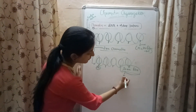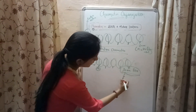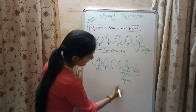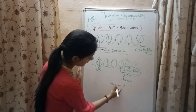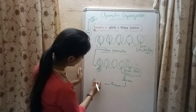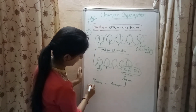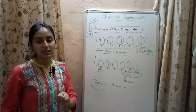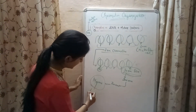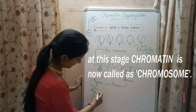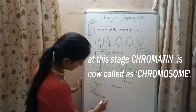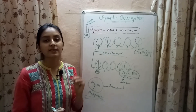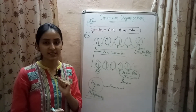Further folding of this chromatin leads to the production of a 300 nanometer fiber, then a 700 nanometer fiber, and lastly a 1400 nanometer chromatin. The 1400 nanometer chromatin is produced at the metaphase stage of the cell cycle. This is how chromatin gets organized inside the nucleus of a eukaryotic cell.